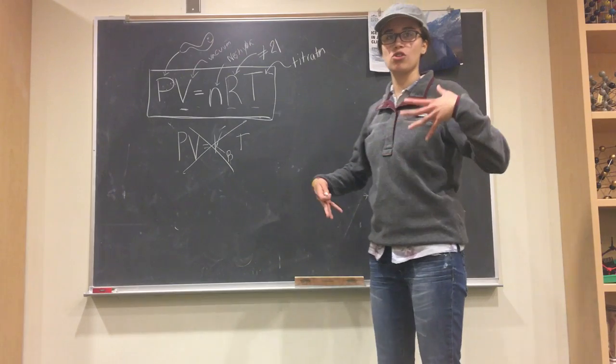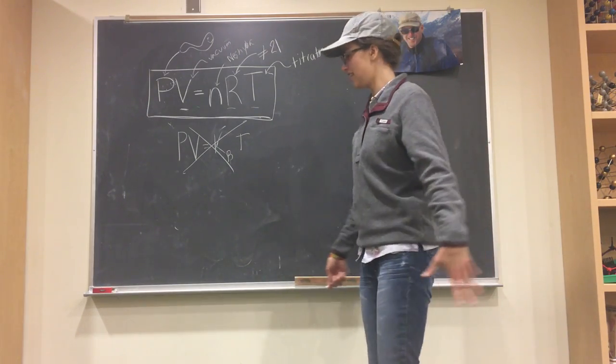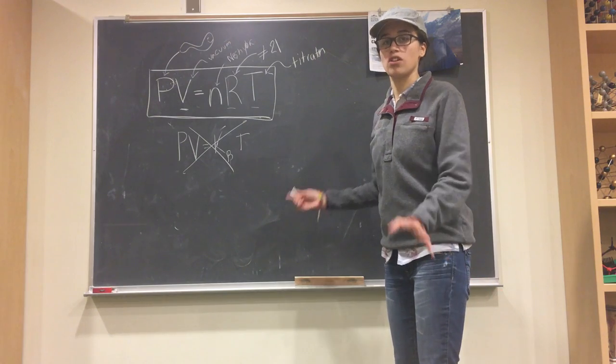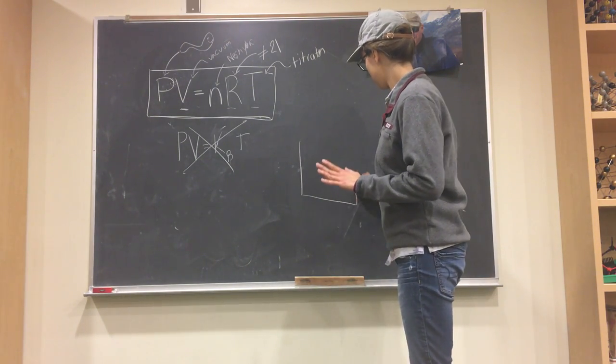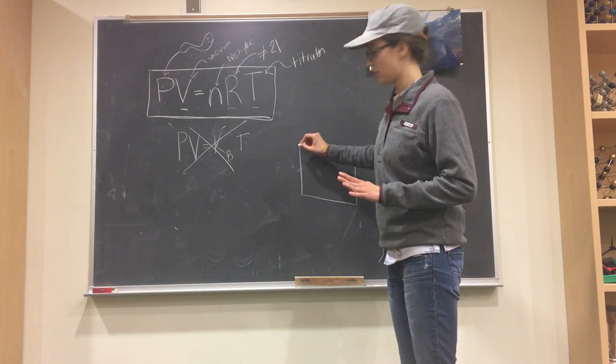So now I'm going to show you how PIVNERT works in state spaces. So to do this, we draw a state space. And a state space is a three-dimensional plot.